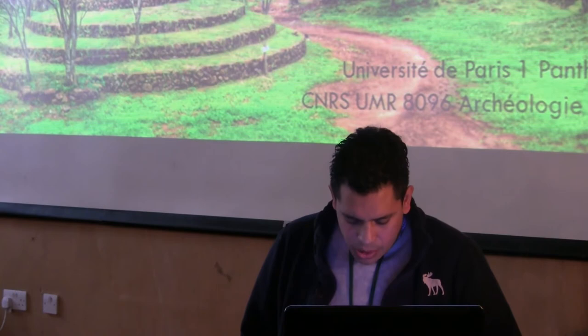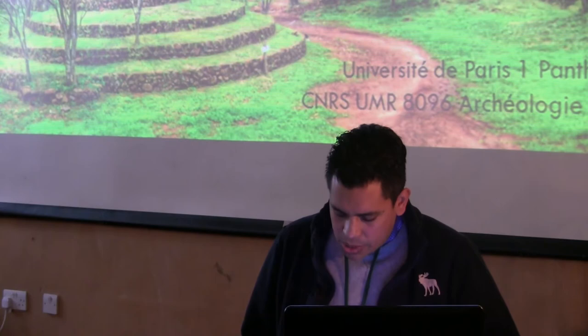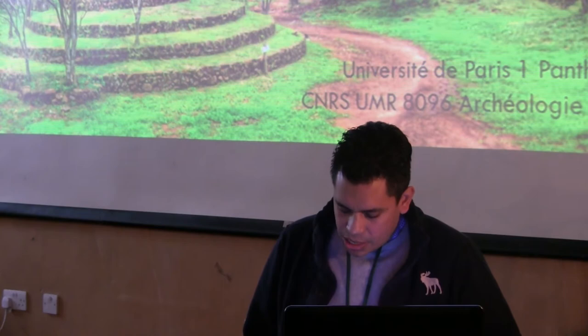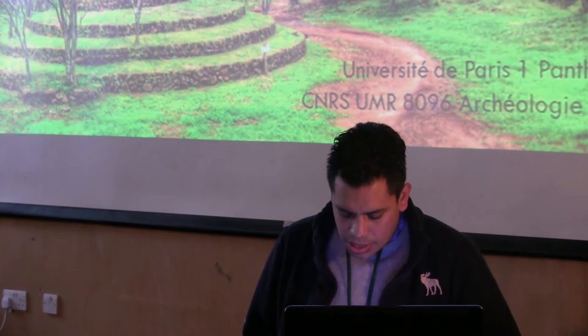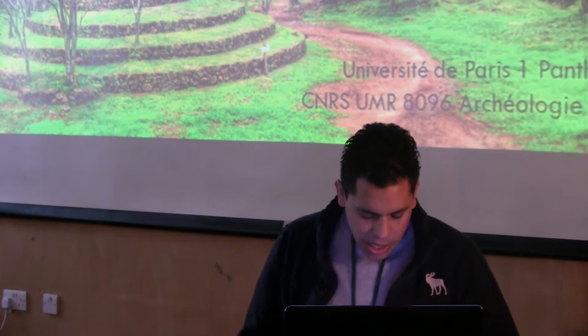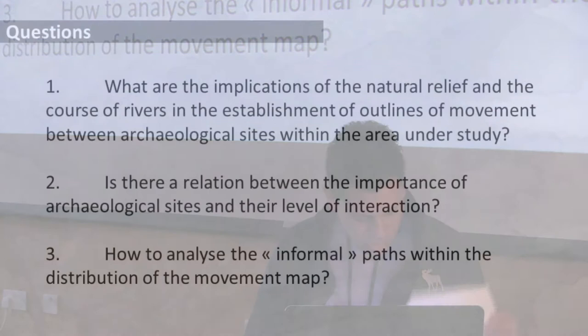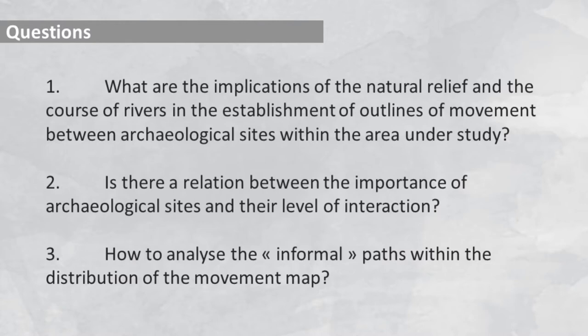In this paper, our objective is to understand by means of archaeological analysis of pathways the study of movement and interaction in the Tequila Valley in the state of Jalisco, Mexico. The application of GIS-related methods and analysis will permit new interpretation of the regional archaeological landscape and will clarify different points: what are the implications of the natural relief and the course of the river on the establishment of lines of movement between archaeological sites? And if there are relations between the importance of archaeological sites and their lateral interaction?